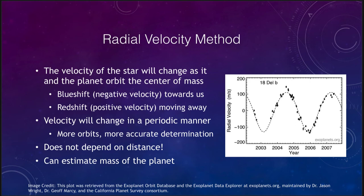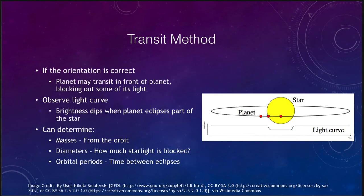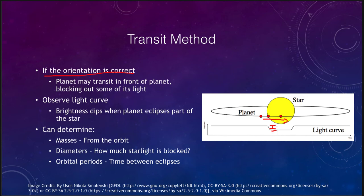Another common method is the transit method. The transit method works only if the orientation of the system is correct — it has to be seen almost edge-on, so that the planet passes in front of the star and temporarily dims its light. If we look at the light curve, we see the brightness, and when the planet passes in front of the star it dims off a little bit of that light. We will see the planet eclipsing part of the star and the light curve drops in brightness. From this we can determine the size of the planet and the orbital period. A more detailed light curve gives us even more information.